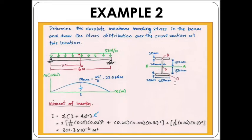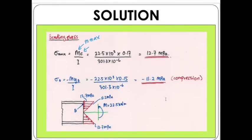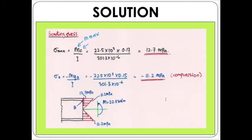Substituting into the bending stress formula: σ_max = M·c/I = (22.5 × 10³ × 0.17) / (301.3 × 10⁻⁶), giving a maximum bending stress of 12.7 MPa. This maximum stress value applies equally to the top and bottom of the beam, with positive and negative signs respectively.